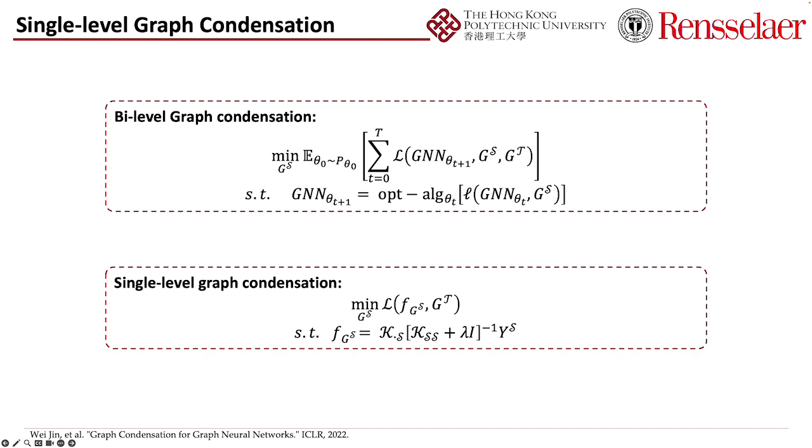Our proposed method addresses this issue by replacing the GNN model with the kernel-ridge regression model. This approach offers two main advantages. First, the KRR model is a convex function, eliminating the need for iterative optimization. Second, KRR avoids the sensitivity of synthetic data to model initialization parameters, eliminating the requirements for multiple initializations. These two advantages significantly simplify the graph condensation problem from a three-loop optimization problem to a single-loop one.